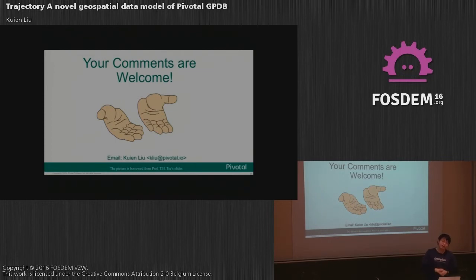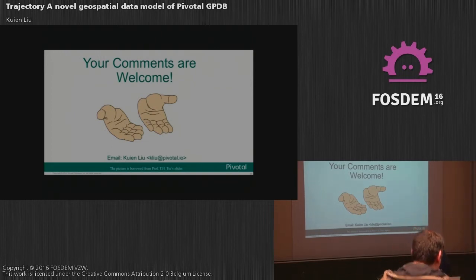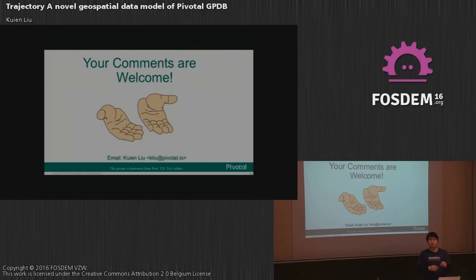Q: Is the trajectory feature only available in the Pivotal database? I understand that Pivotal is like an extension to Postgres. A: Yes, that's a good question. After we develop this, I plan to move it to PostGIS — to make it a separate component of PostGIS. So it would be possible for someone with a smaller dataset to use regular Postgres as well.